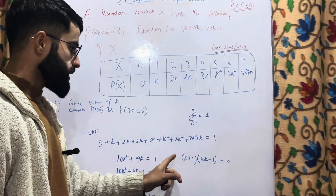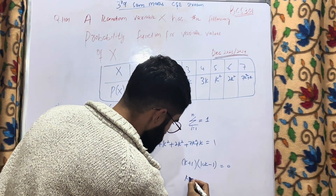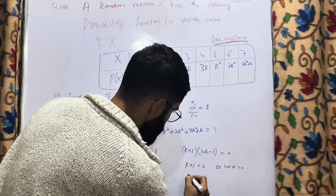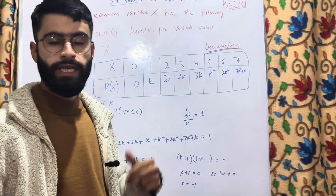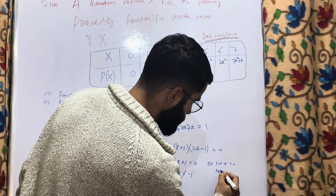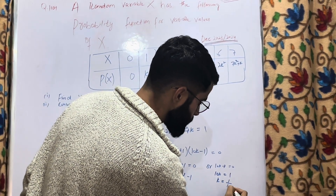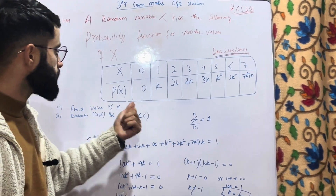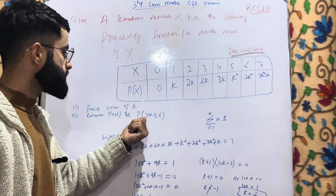From (k + 1)(10k − 1) = 0, either k + 1 = 0 giving k = −1, or 10k − 1 = 0 giving k = 1/10. Since probability can never be negative, k = −1 is rejected. Therefore k = 1/10. This is the answer to the first part of the question: find the value of k.